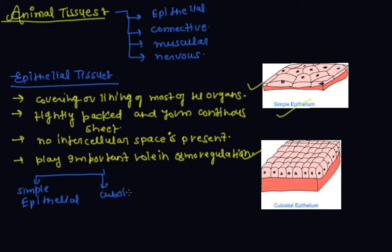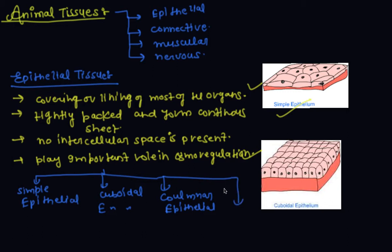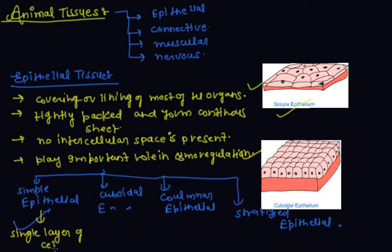The types of epithelial tissue are: first, simple epithelial; second, cuboidal epithelial; third, columnar epithelial; and the fourth is stratified epithelial. In simple epithelium, it is composed of a single layer of cells.